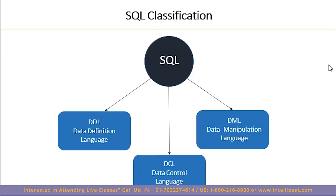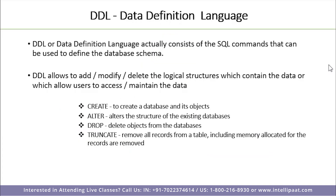Let's understand what the main classifications of SQL are. There are four different types; however, three are very important: DDL, DML, and DCL. DDL stands for Data Definition Language, DCL stands for Data Control Language, and DML stands for Data Manipulation Language. Now let's see each one in detail.